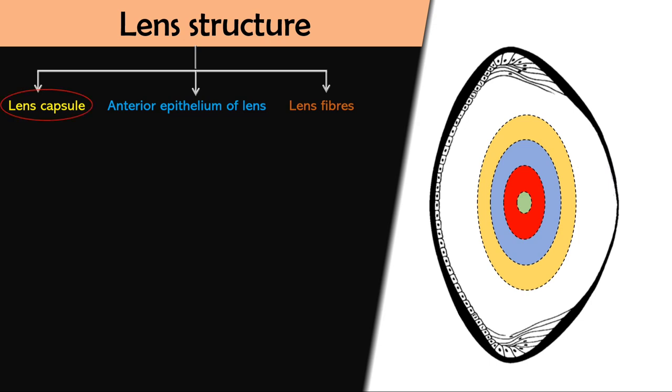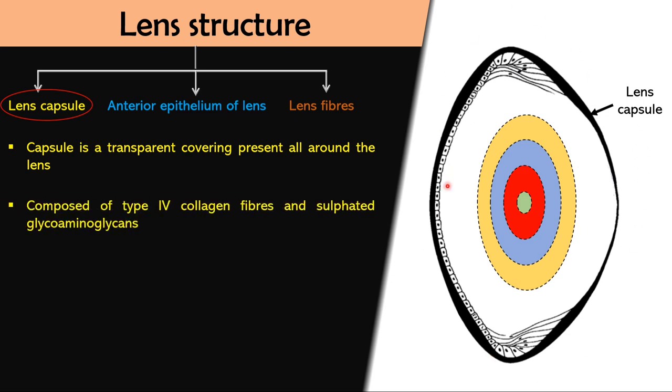Start with lens capsule. When we say capsule that means cover or a covering. Lens capsule is a transparent covering present all around the lens, composed of type 4 collagen fibers and sulfated glycosaminoglycans. It is the thickest membrane in the entire body. As you can see in this picture,